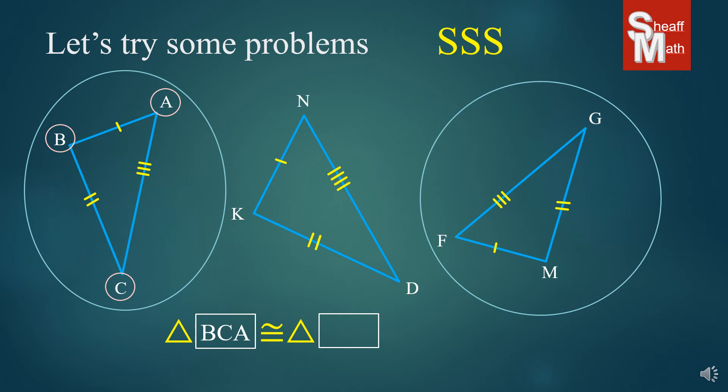Now, the order of the letters that I put in the next triangle have to be the exact corresponding order. So, my B, which is the first one, matches M. And from M, I go across two-tick marks to G, and then across the three-tick marks to the F. So, my triangle is called M, G, F. It has to be in that order. If it isn't, it is completely wrong. You're saying that two sides and two points are corresponding when they're not.